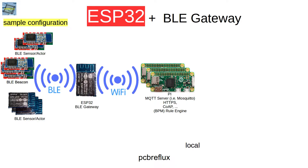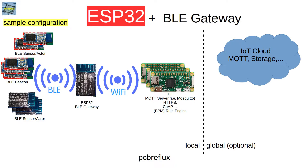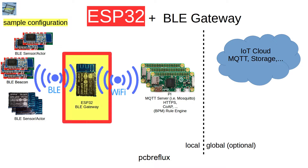On the other side of our gateway, we can connect via Wi-Fi to any server infrastructure we like — maybe to an MQTT server like Mosquitto. We can run the Mosquitto server on a Raspberry Pi or whatever cheap server you have in mind. Optionally, we can also use cloud services and send the data over the MQTT broker to an MQTT cloud server, or store the sensor data in a cloud storage server.